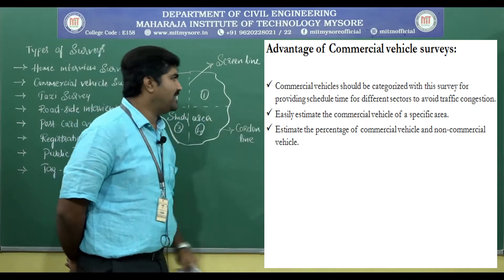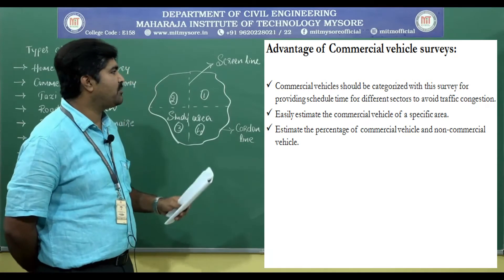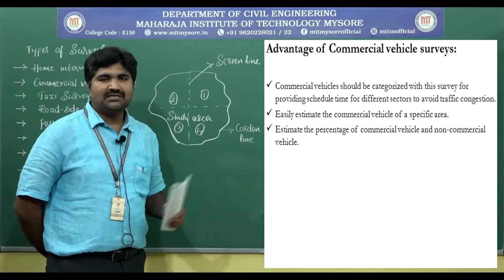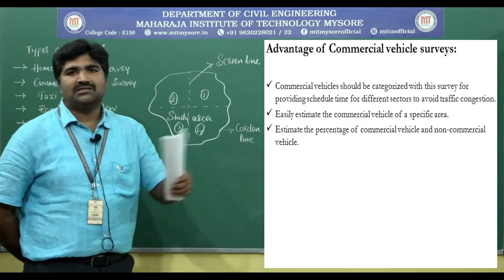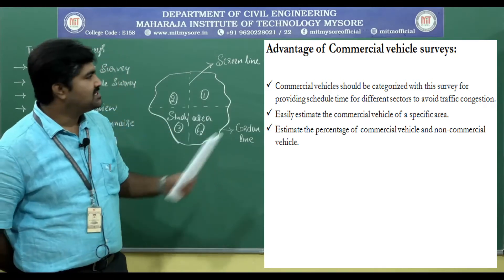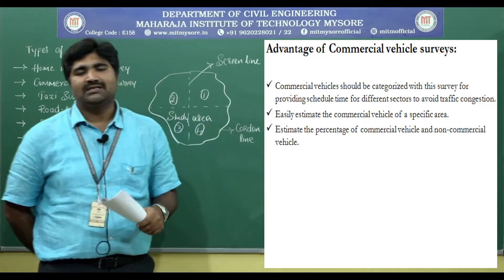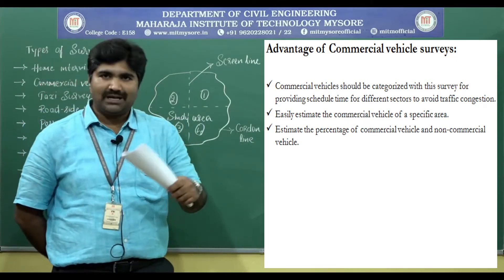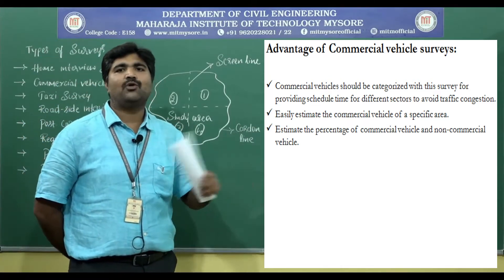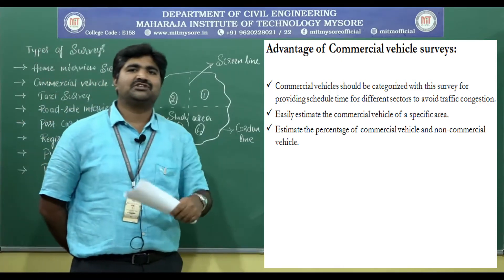Advantages of the commercial vehicle survey: commercial vehicles should be categorized with this survey for the purpose of providing scheduled time for different sectors to avoid traffic congestion. If we provide separate scheduled time for the movement of commercial vehicles we can avoid congestion. We can provide separate time for commercial vehicles — that may be early morning and late evening — when vehicle movement is less. Commercial vehicles can be allowed during those times because they have loading and unloading operations which require more space, so it relieves congestion during peak hours.